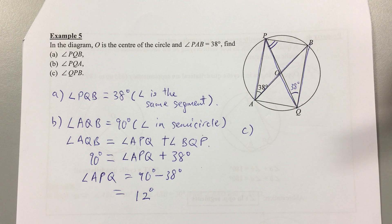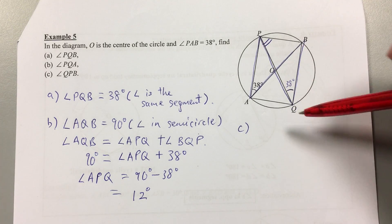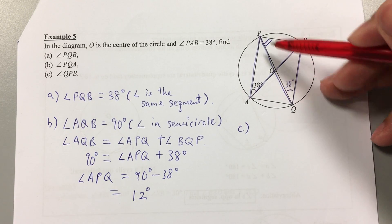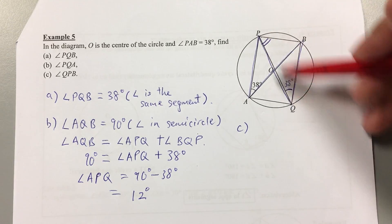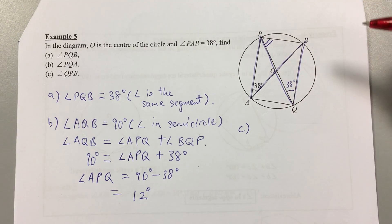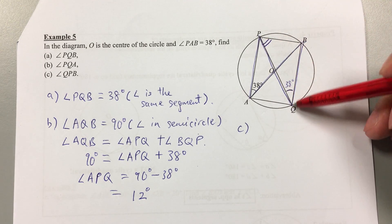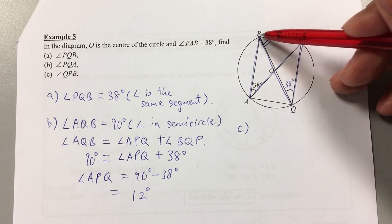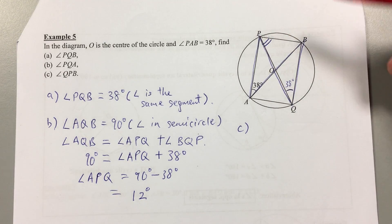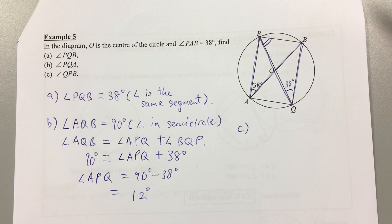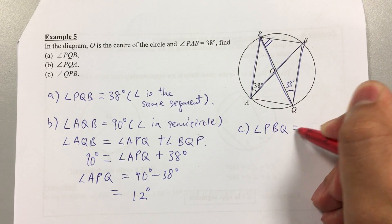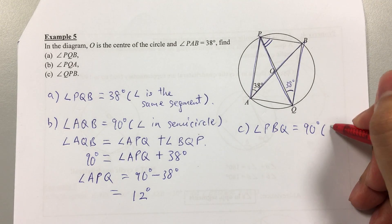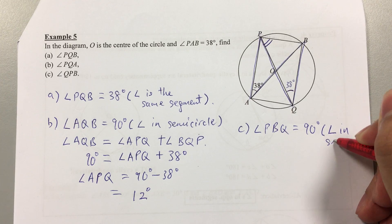Notice that QOP is a straight line passing through the center O, so this is also a diameter. Looking at triangle PQB, angle PBQ is 90 degrees by the angle in semicircle property.